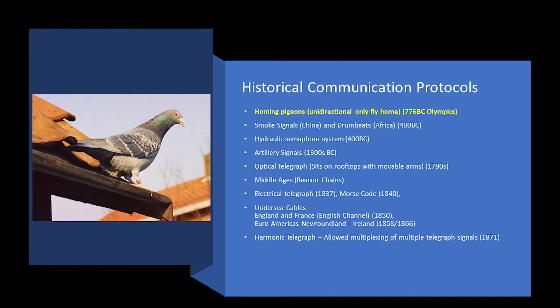First, a bit of history. Communications protocols predate computers. The earliest recorded usage of them can be traced back to 776 BC during the first Olympics. Homing pigeons were used to send the results of the Olympics from the city of Olympia back to the capital of Athens. Homing pigeons are an interesting communications medium because they operate in one direction only — they can only fly home — and because of that, we cannot use the same bird to send messages back. This property is called unidirectionality.